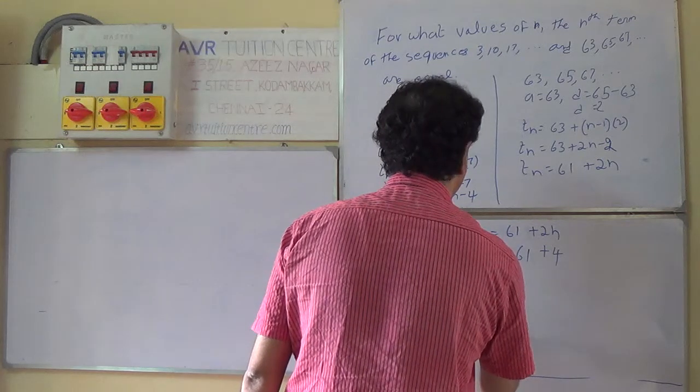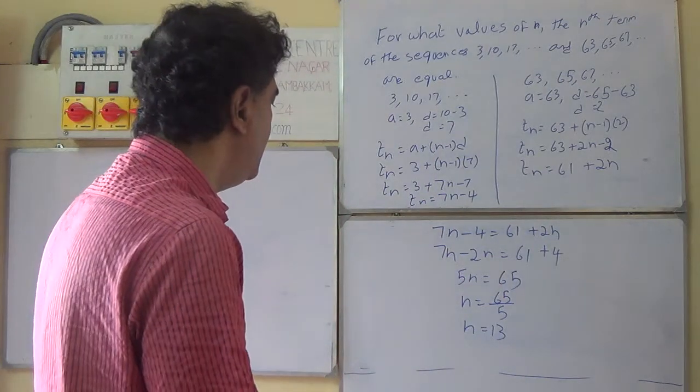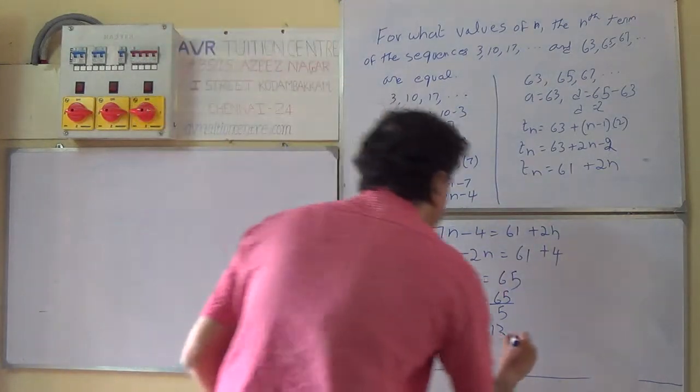n equals 13. The thirteenth term of these two sequences will be equal. Thirteenth is the answer.